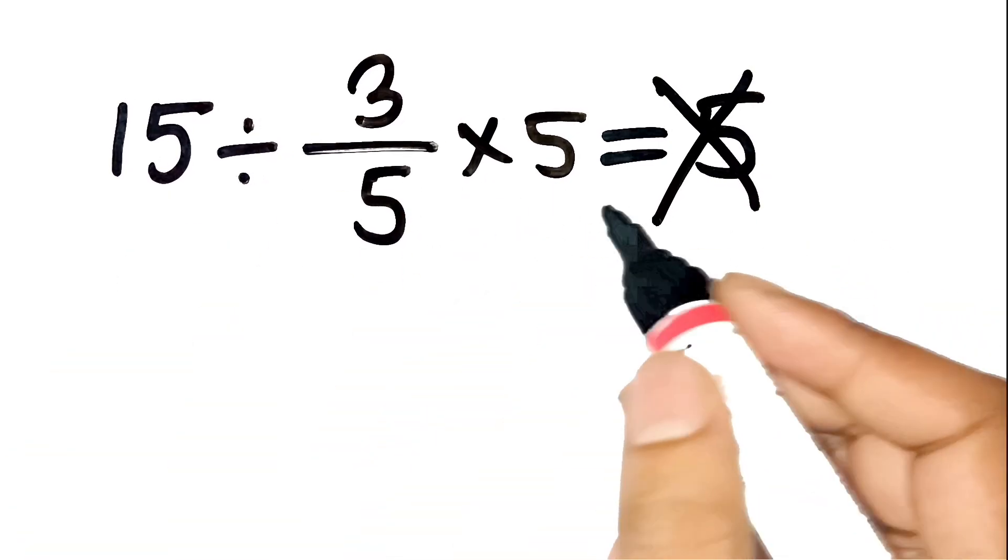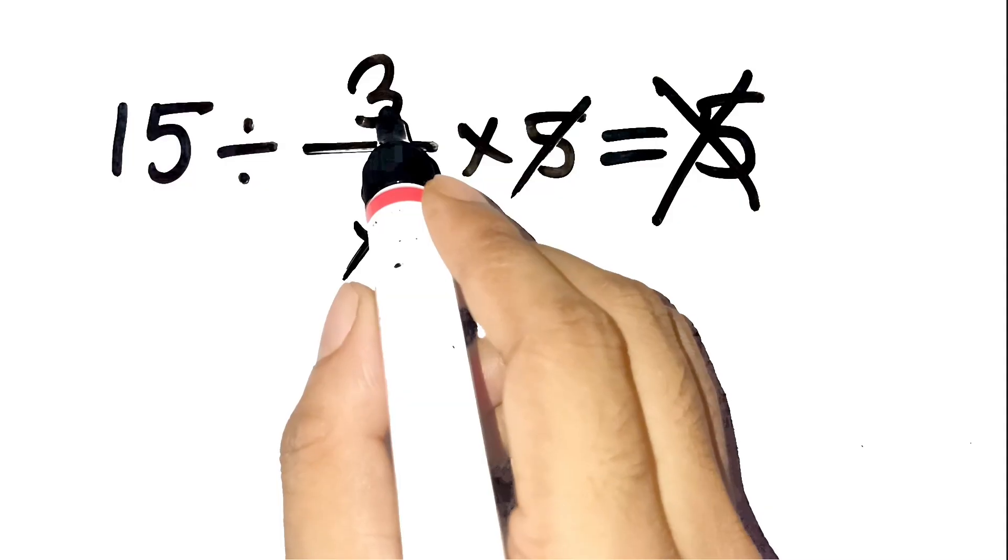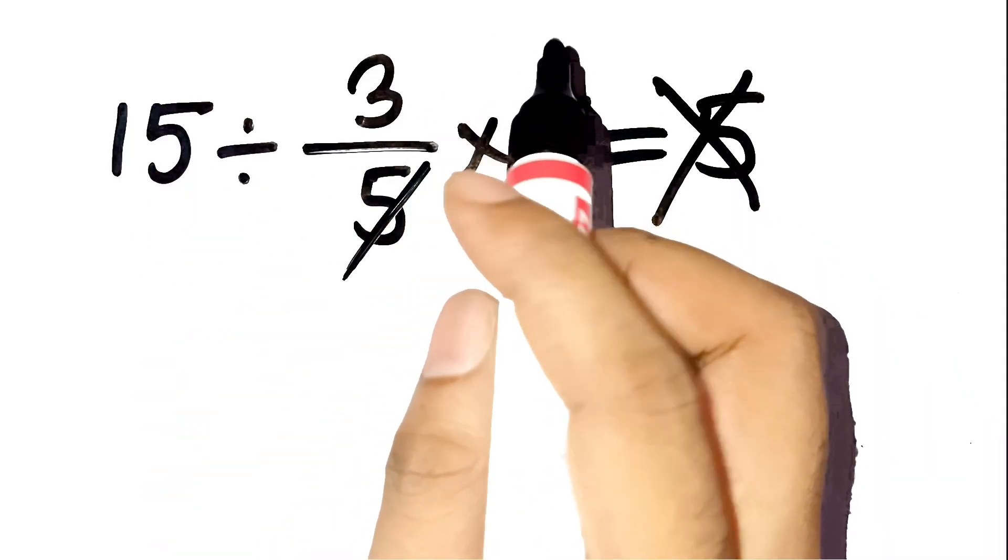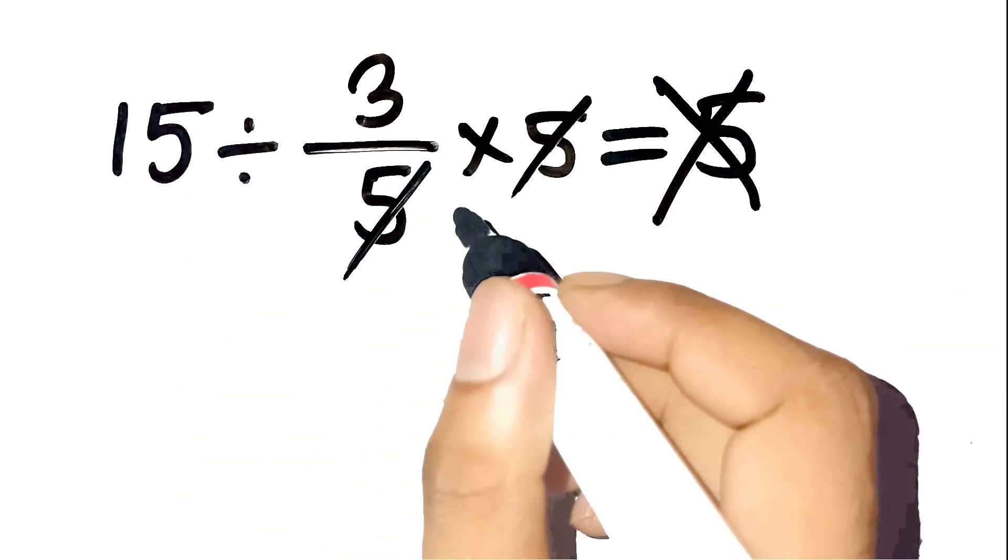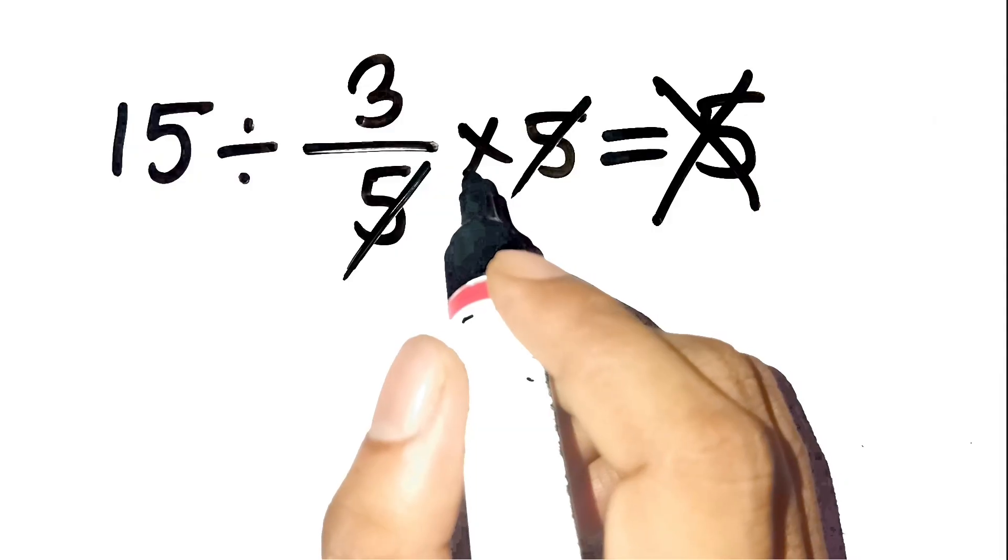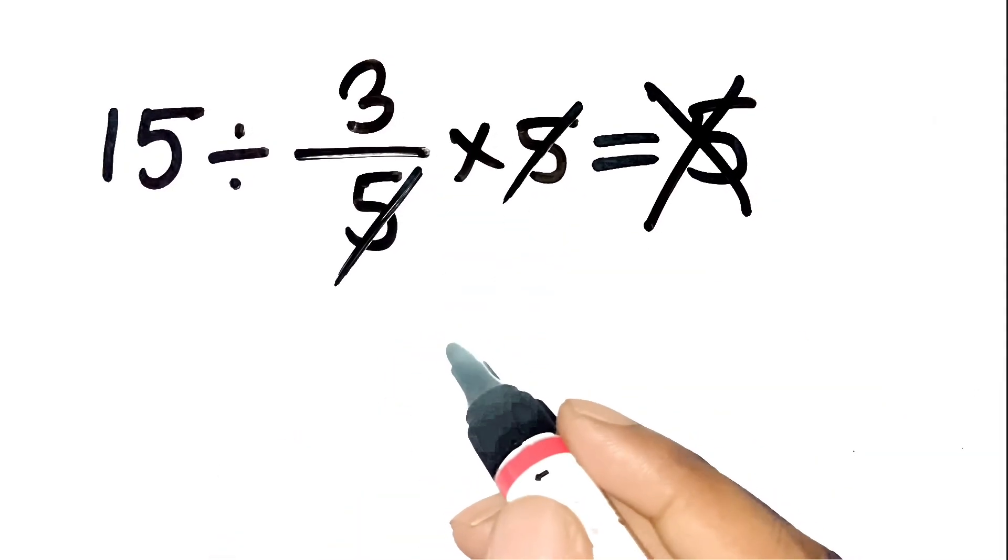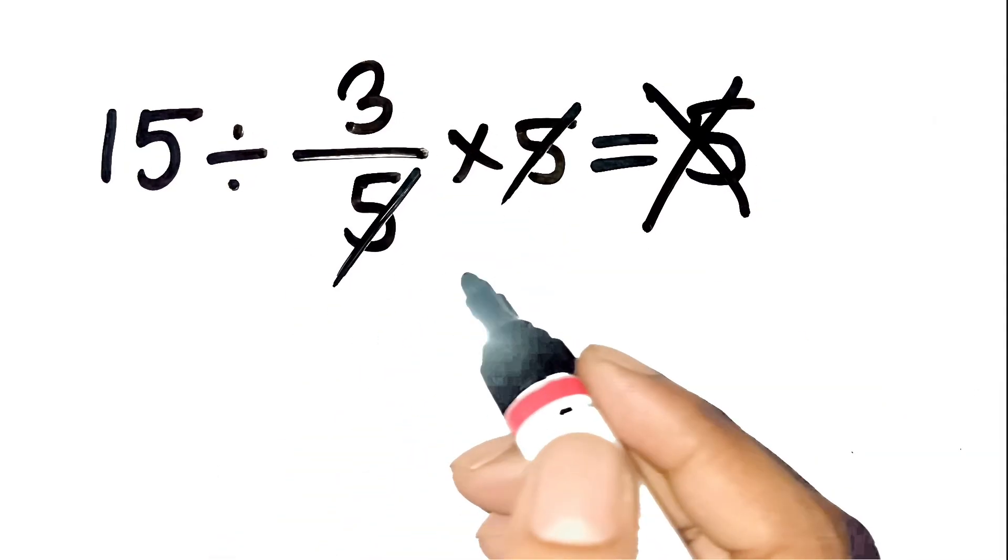You're probably thinking, oh, the 5s cancel out, so 15 divided by 3 is 5, right? That's exactly the common mistake almost everyone makes when they see this problem. It looks like magic, but nope, math has its own rules.